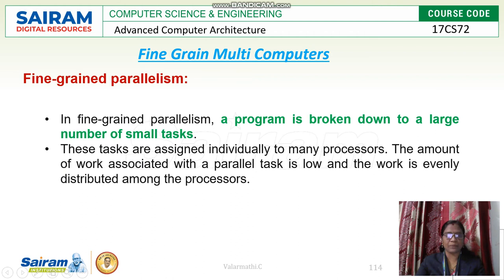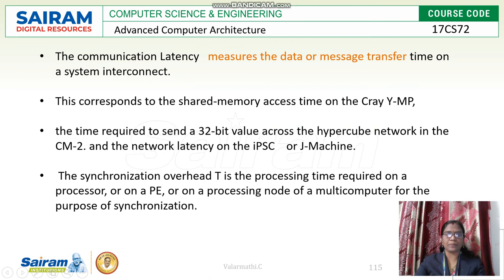Moving to fine-grained multi-computers, we first need to understand the meaning of fine-grained parallelism. Fine-grained is one programming level approach to achieve parallelism. Here, fine-grained consists of a lesser number of instructions per task, so a program is broken down into a large number of small tasks — that technology is called fine-grained parallelism. Communication latency in fine-grained parallelism measures the data or message transfer time on the system interconnect.